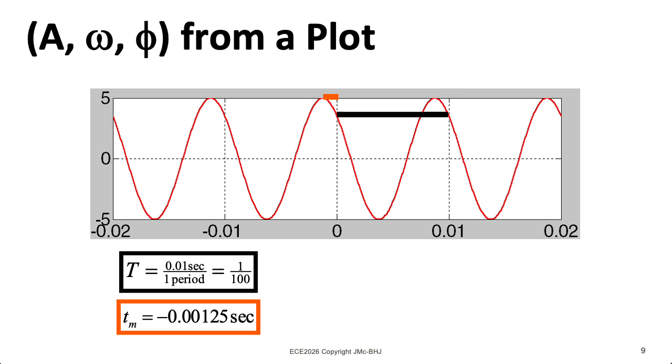From the period, I can compute the frequency in radians per second specified by omega as 2π divided by T. So that's 2π divided by 0.01, which gives me 200π.